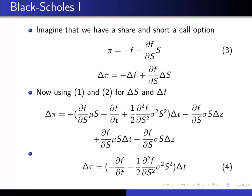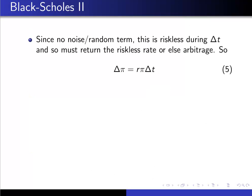Now the next step: since there's no noise or random term—remember we talked about the trend and the noise term, so the deterministic and the random term—since in our portfolio there's no noise or random term, then our portfolio is riskless during delta t, during that time, because remember we are dynamically hedging.